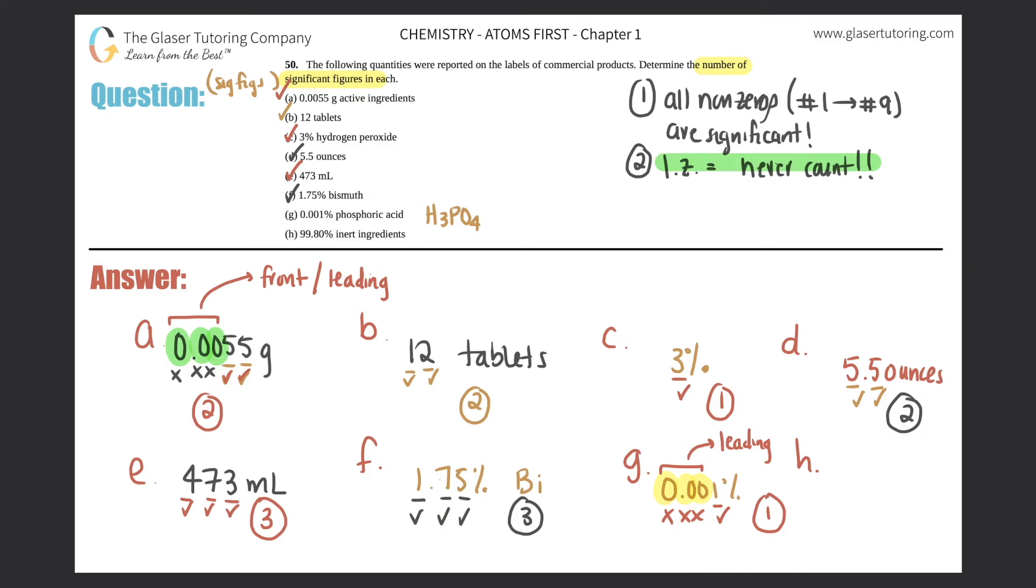Last but not least, h: 99.80% inert ingredients. I got a nine, nine, and an eight. There's a decimal here, so these all count because they're all non-zeros. But now let's just look at this zero in the back here.